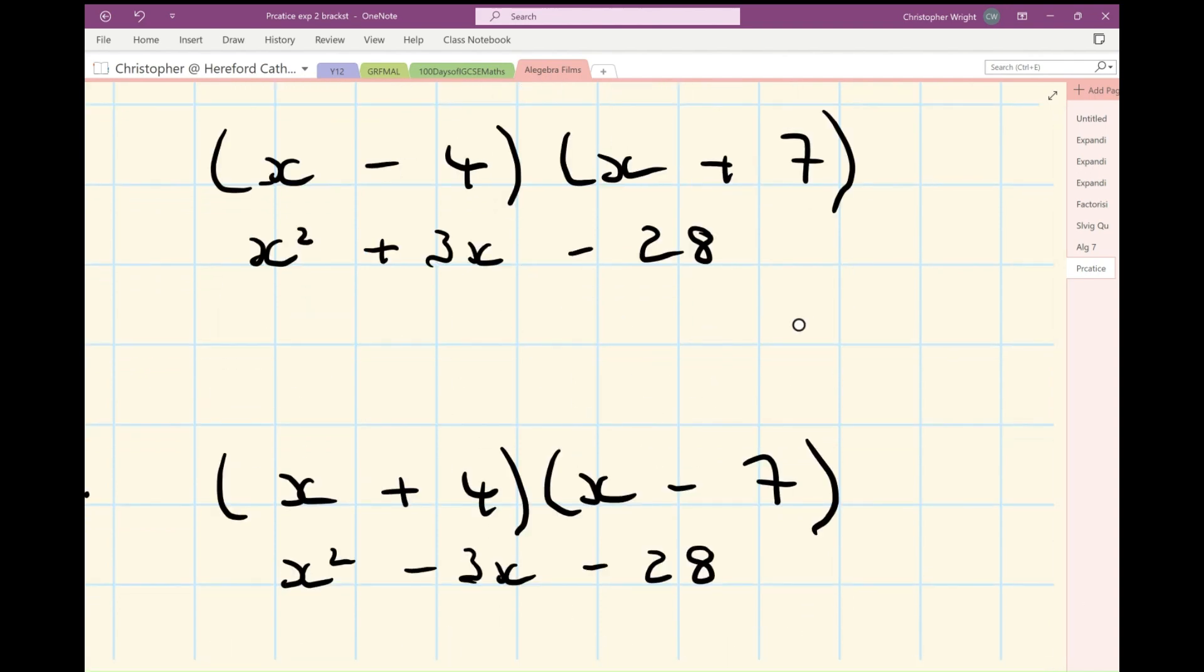And have a look at these two. You've got minus 28 at the end of each one, minus four times plus seven, or plus four times minus seven. And then in the first one, you've got plus three x, because it's plus seven x is minus four. And then in the second one, you've got minus three x, because it's minus seven x, plus four x.